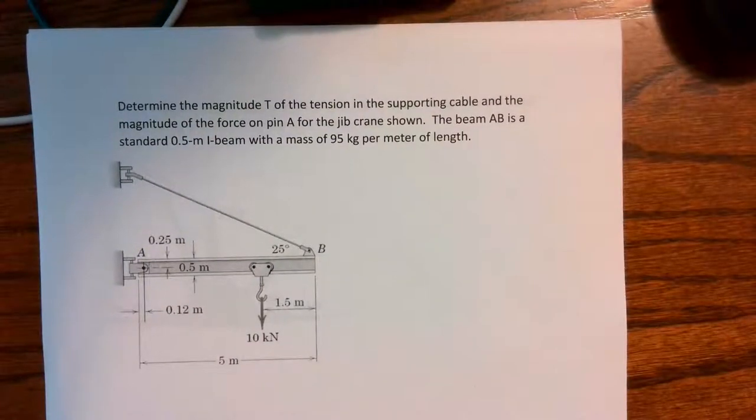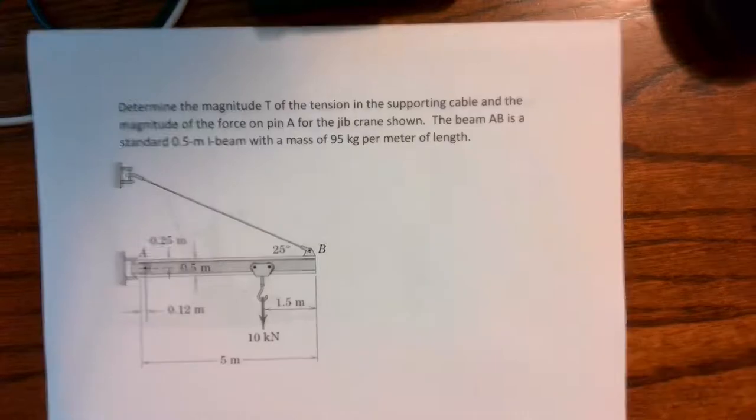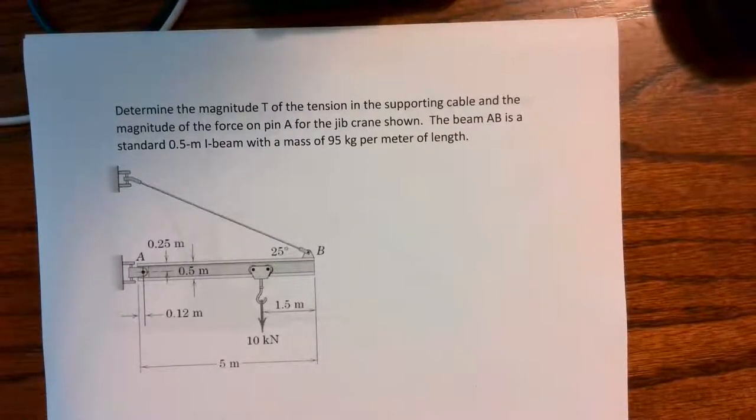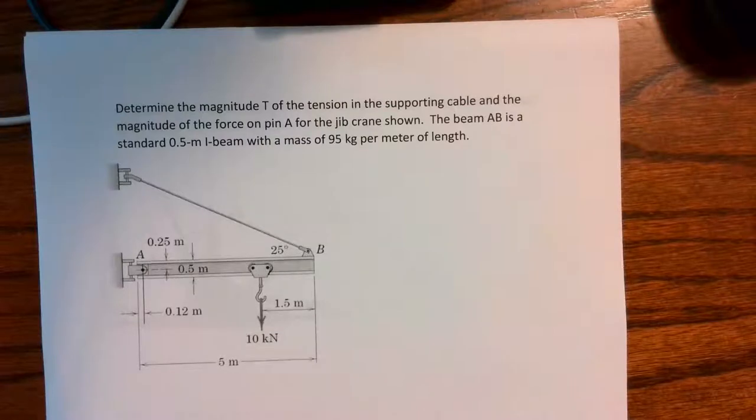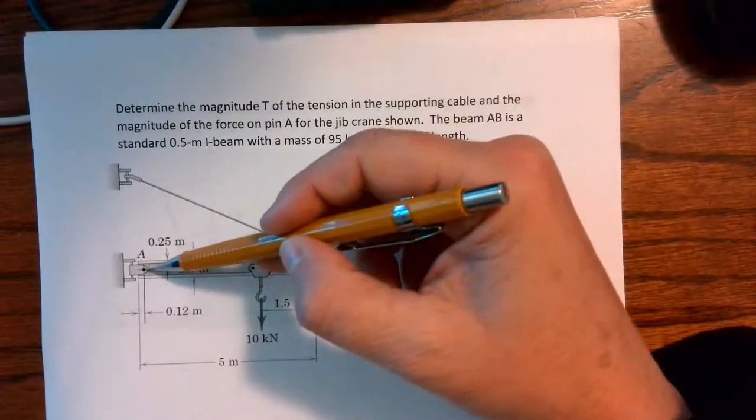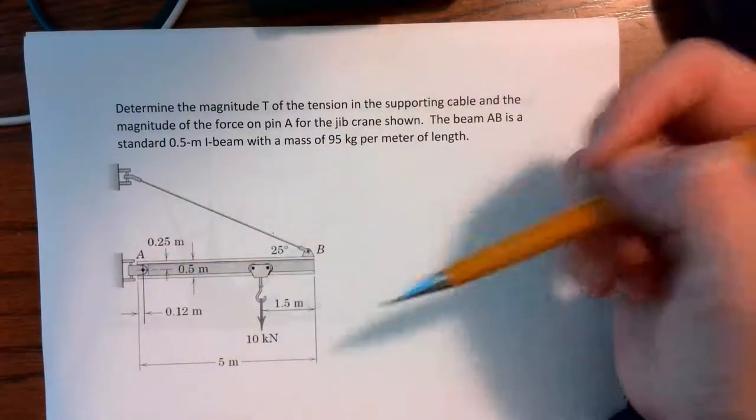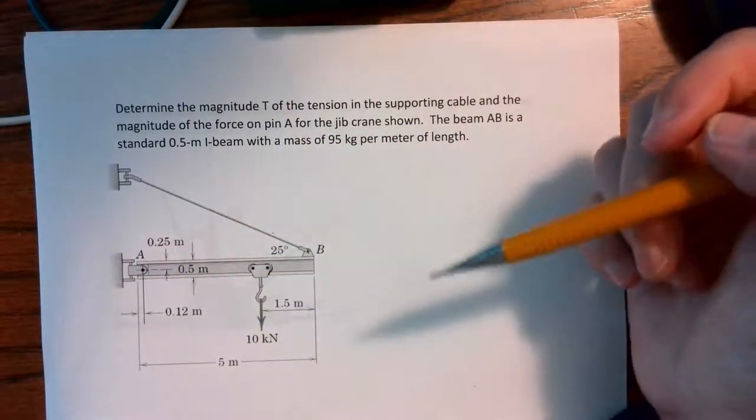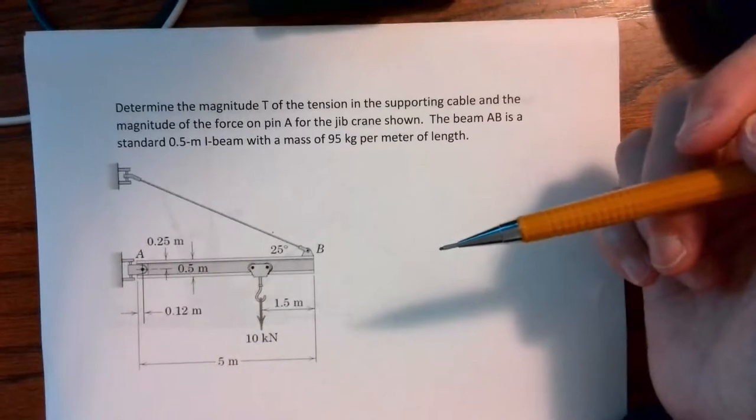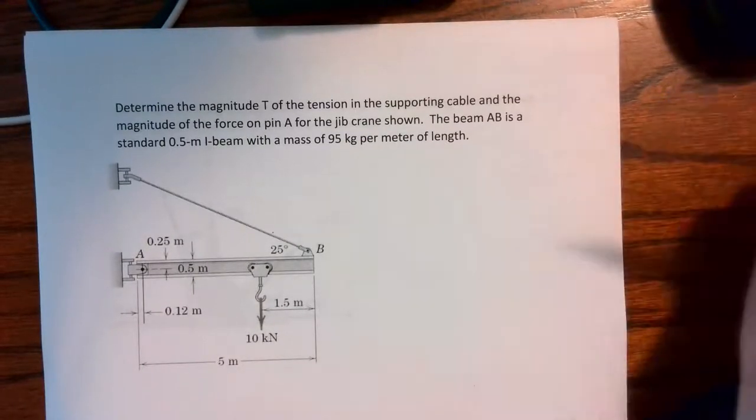This is another problem for finding reactions of a simply supported system. We want to determine the magnitude T of the tension in the supporting cable and the magnitude of the force at pin A for the jib crane shown.